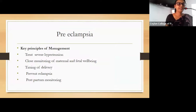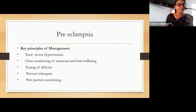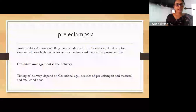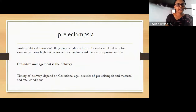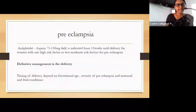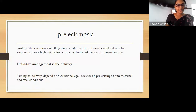The three principles of management of preeclampsia are: treat severe hypertension as soon as possible, arrange close monitoring of maternal and fetal wellbeing, and ensure appropriate timing of delivery. We should prevent eclampsia and arrange postpartum monitoring. Aspirin 75 to 150 mg daily is indicated from 12 weeks until delivery for women with one high-risk factor or two moderate risk factors for preeclampsia.